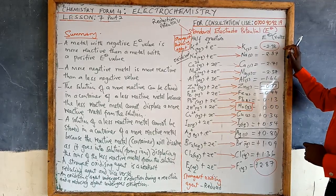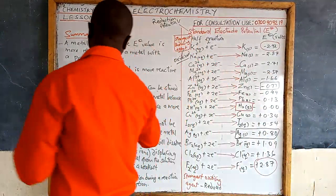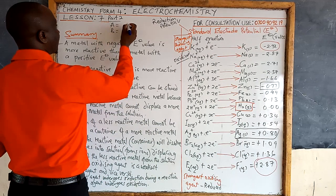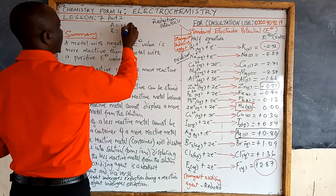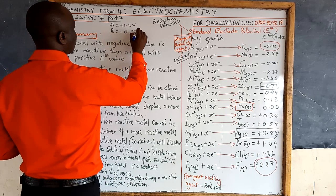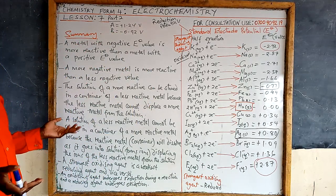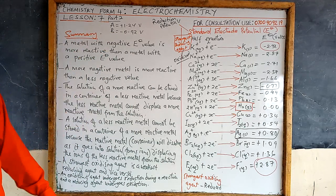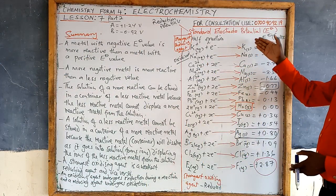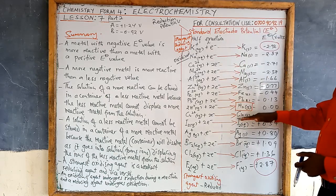So that is where we draw our conclusion: if you have two metals, one with a positive value and another with a negative value — as I said in the exam, you will be given element A and element B with their electrode potentials, say positive 1.24 and negative 0.92 volts. You are asked to identify which is more reactive. B is more reactive than A, and we can see that from the reactivity order of metals from most reactive to least reactive.